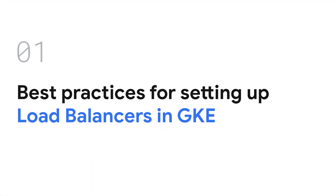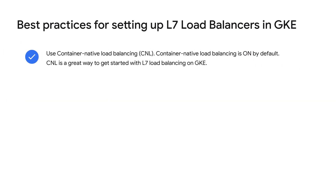After choosing the right GKE load balancer for your needs, the next step is to understand the best practices to configure either a Layer 4 or Layer 7 load balancer. The first best practice for a Layer 7 load balancer is to keep container-native load balancing on, which is configured by default. It's easy to use and provides good performance and reliability, so there is no need to disable it unless you have a specific reason to do so.